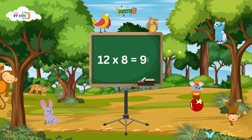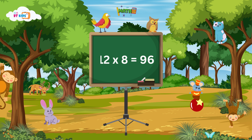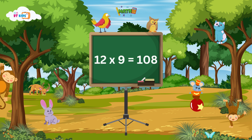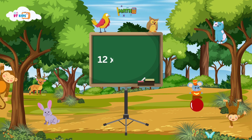Twelve eights are ninety-six. Twelve nines are a hundred-eight.